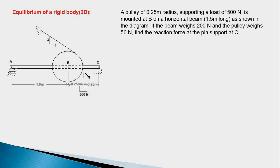The other end of the cable is connected to the wall. The beam weighs 200 newtons and the pulley also weighs 50 newtons. We have to find the reaction forces at the pin support C. The first step, as you are aware, is to draw a free body diagram.